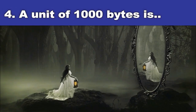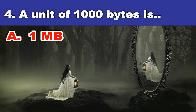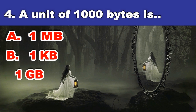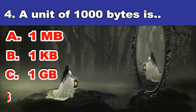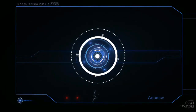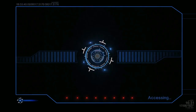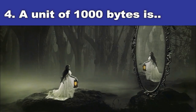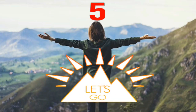A unit of 1,000 bytes is — A. One megabyte, B. One kilobyte, C. One gigabyte, D. One terabyte. And the answer is: One kilobyte. Fifth question.